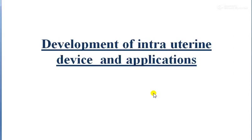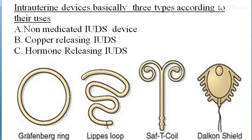Hello everyone. Today's topic is the development of intrauterine devices and their applications. In this part, we will discuss types of intrauterine devices, their mechanisms, and duration of protection. According to their uses, intrauterine devices are basically three types: non-medicated IUDs, copper-releasing IUDs, and hormone-releasing IUDs.